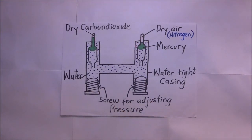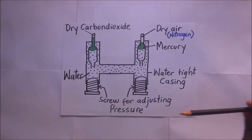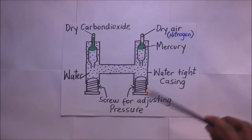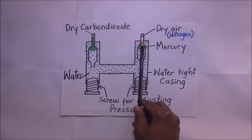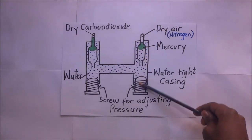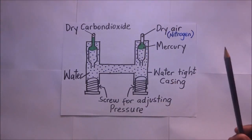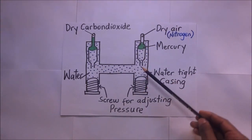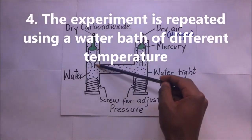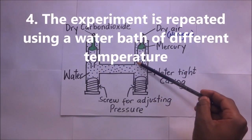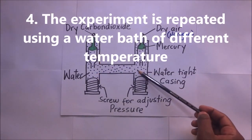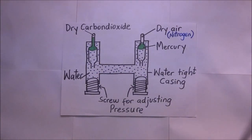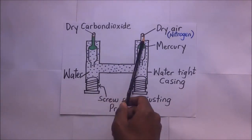You repeat this experiment using different temperatures. To ensure different temperatures, you simply change the water bath by putting in fresh water at a different temperature, then monitor the pressure and volume of these trapped gases.